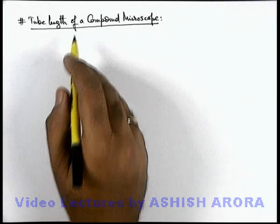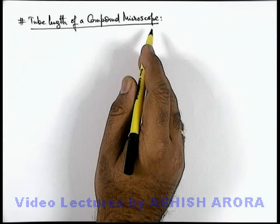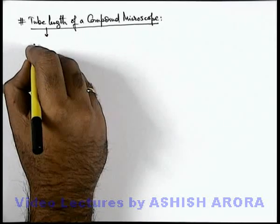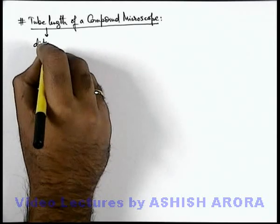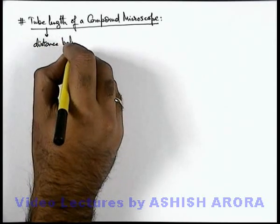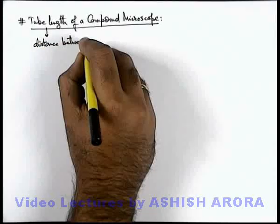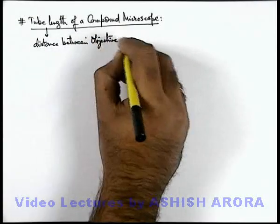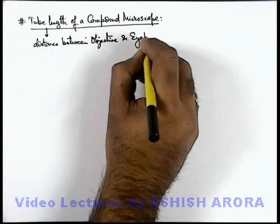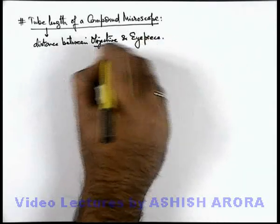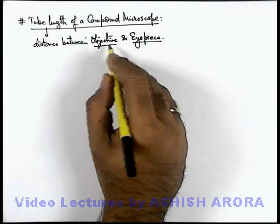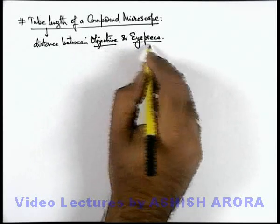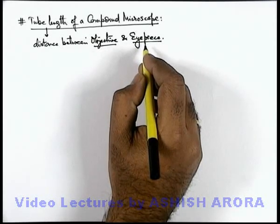Let us now discuss the tube length of a compound microscope. The tube length can be written as the distance between the objective and eyepiece of the microscope — that is, the tube in which the objective and eyepiece are fitted. The separation between the two lenses of the microscope is termed the tube length.